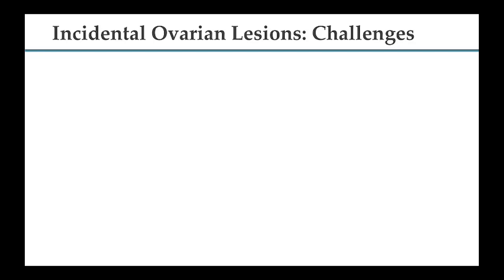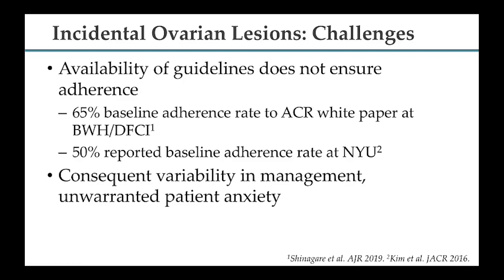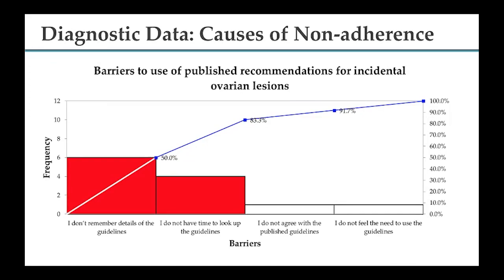Just because we have these guidelines doesn't mean all problems are solved. Availability of guidelines does not ensure adherence. At our institution, only about 65% of reports showed adherence to the ACR white paper; other studies report about 50% adherence. This leads to variability in management and unwarranted patient anxiety. We surveyed radiologists who practice abdominal and pelvic imaging. The biggest barriers were people not remembering the guideline details and not having time to look them up. These two causes accounted for 83% of the barriers.